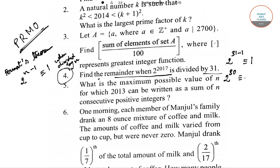Similarly, if we do (2 to the power 30) to the power 67, we will get a remainder of 1 to the power 67, which equals 1. So 2 to the power 2010 — since 30 times 67 is 2010 — gives us a remainder of 1 when divided by 31.